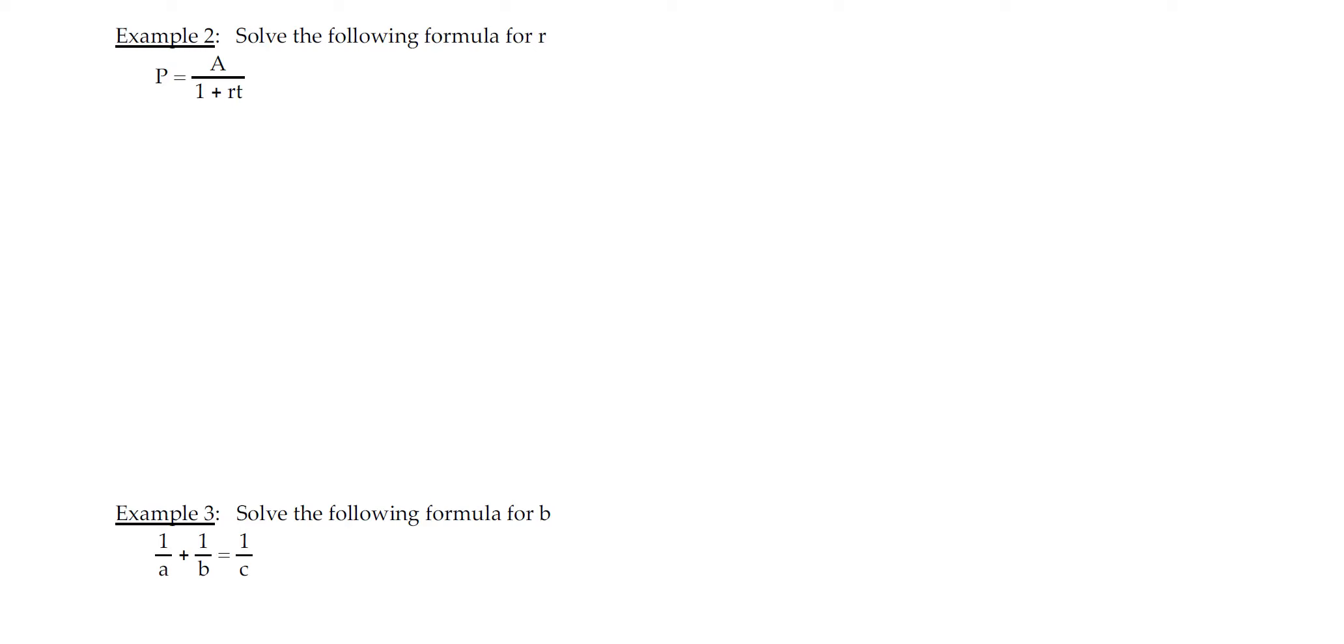Solve for r. Okay, so we have fractions. So let's multiply by the common denominator of the 1 plus rt. So we have 1 plus rt times capital P equals, and on this side, I'll just reduce and it is A.